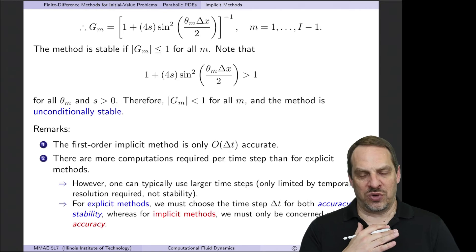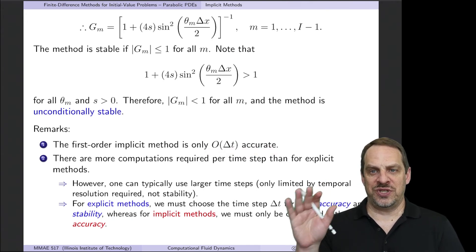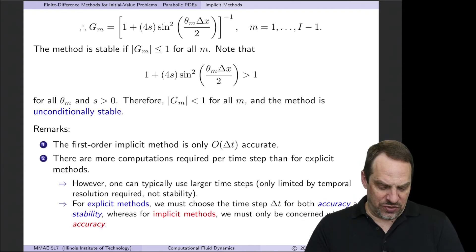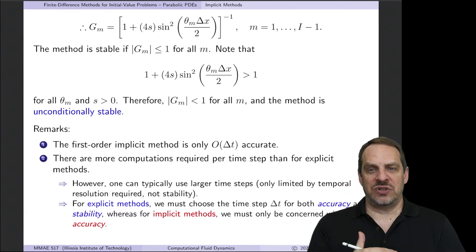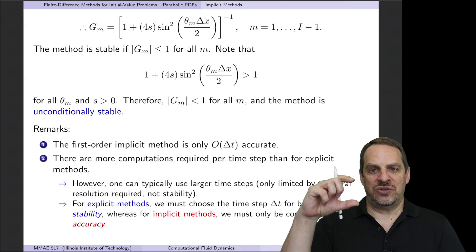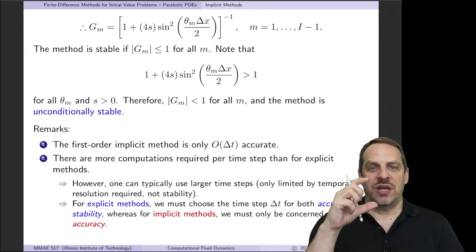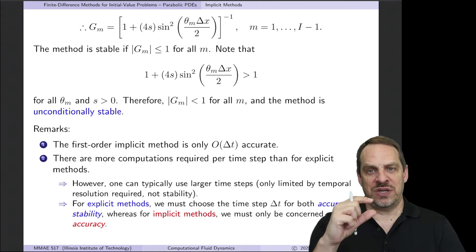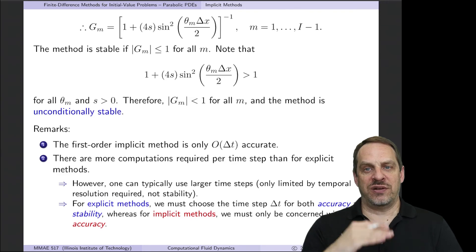We don't have to worry about the value of s at all for numerical stability. However, the method is only first-order accurate in time — no better than the first-order explicit method in terms of temporal accuracy. There are more computations required per time step since we're now solving a tridiagonal system at each step. The key is that by eliminating the stability concern, we only need to determine the delta t necessary for numerical accuracy. Since the stability criteria typically limits the time step more than accuracy, removing that limitation means we can take larger time steps and — even with more work per step — it'll take much less time in aggregate.